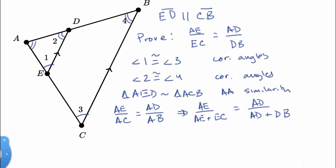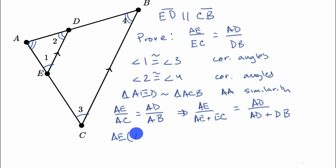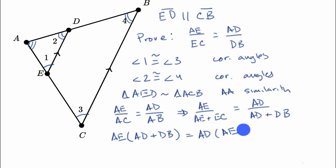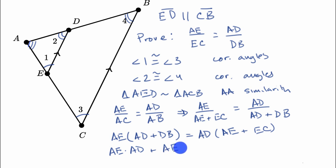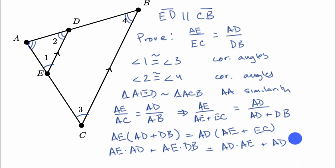One way to simplify this is to cross multiply — equivalent to multiplying both sides by both denominators. So this gives us the length of segment AE times (AD plus DB) must equal the length of AD times (AE plus EC). Distributing, we get: AE · AD + AD · DB equals AD · AE plus AD · EC.